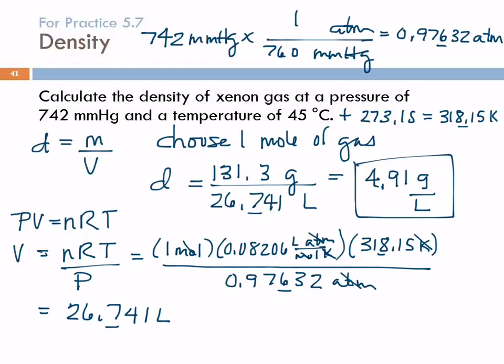The density of a gas depends on which gas it is because that involves mass. Pressure, volume, and temperature depend on the number of particles.